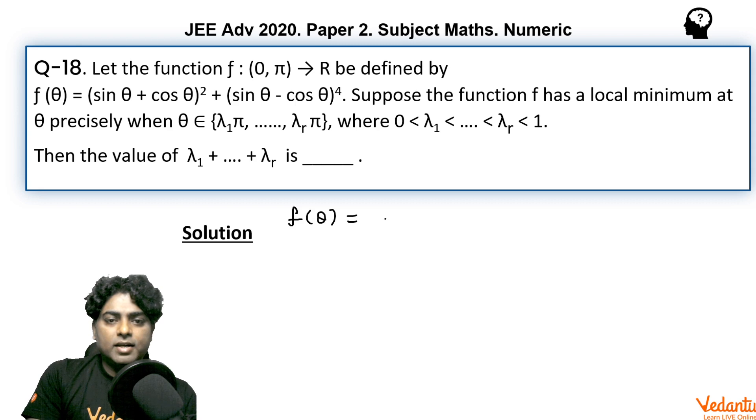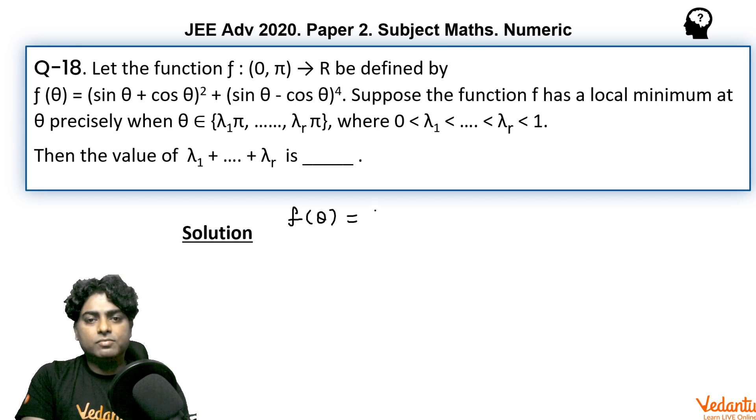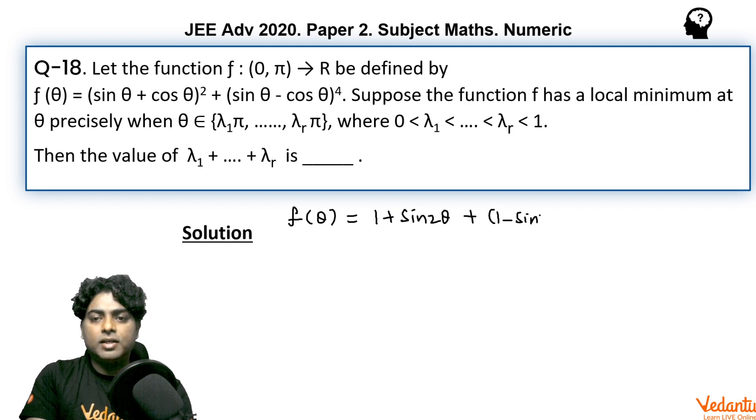So I can write f(θ) as 1 + sin 2θ, plus (1 - sin 2θ)² because (sin θ - cos θ)² is 1 - sin 2θ. Further we can write it as sin² 2θ - sin 2θ + 2.